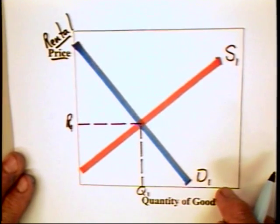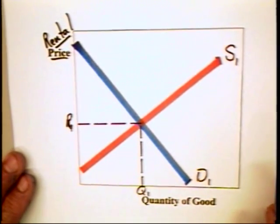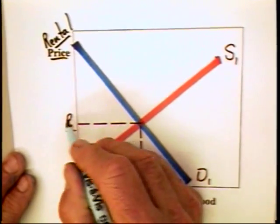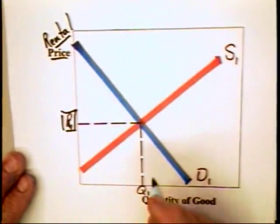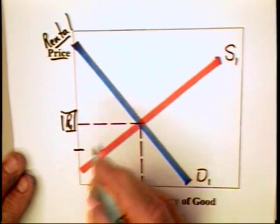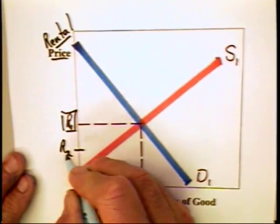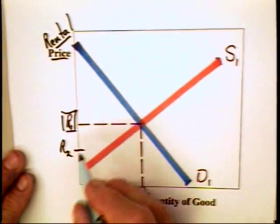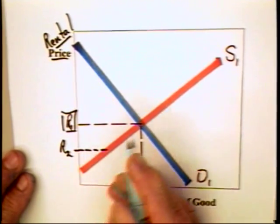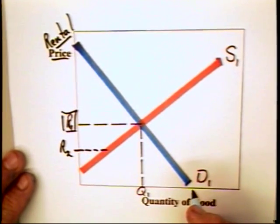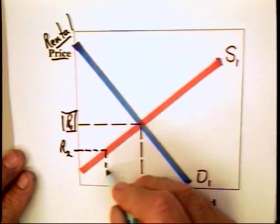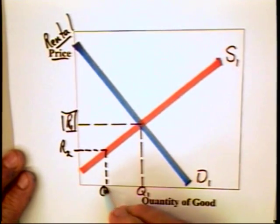Let's suppose that the local authorities decide that a rental price of R1 is too high for low-income renters, and they declare that a rental payment of R2 is appropriate. What are the consequences? Under standard analysis, the consequences are rather bleak. At a rental price of R2, the number of units that will be available will fall from Q1 to Q2.